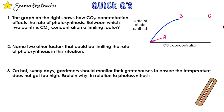Let's check what you've understood. Pause the video and try the quick questions. Question 1: the graph shows how CO2 concentration affects the rate of photosynthesis — between which two points is CO2 concentration a limiting factor? CO2 concentration is a limiting factor when increasing it also increases the rate of photosynthesis. We can see that happens at this part of the graph, meaning between A and B, CO2 concentration was a limiting factor.